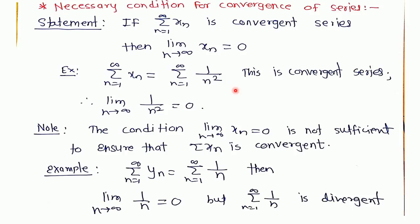For example, if we have a series 1 by n squared, then this series is a convergent series. If we take the limit of the nth term of the series, it is equal to 0.